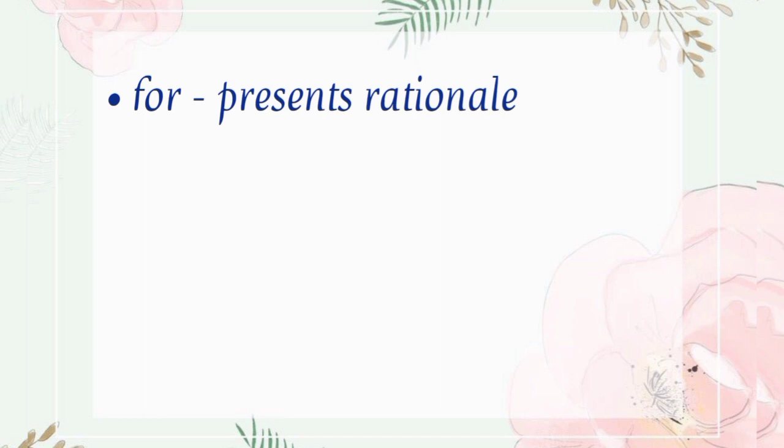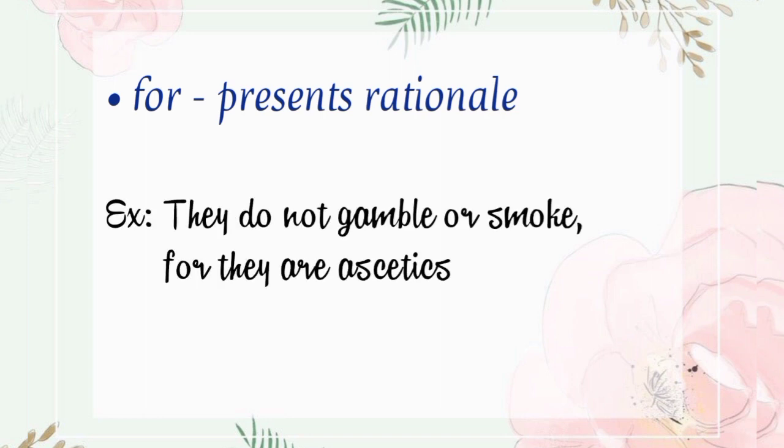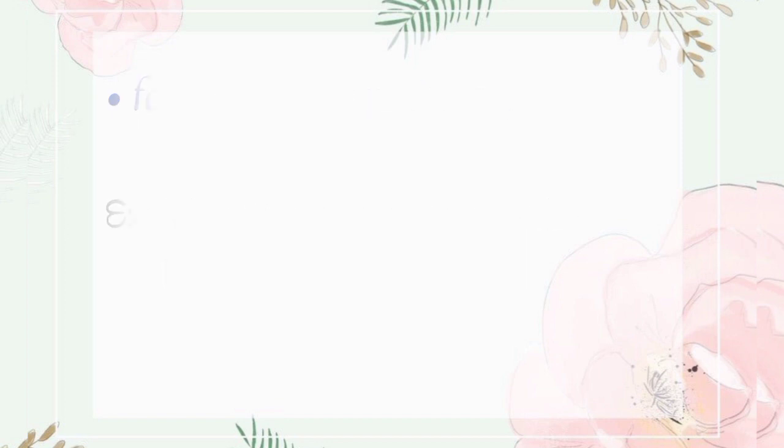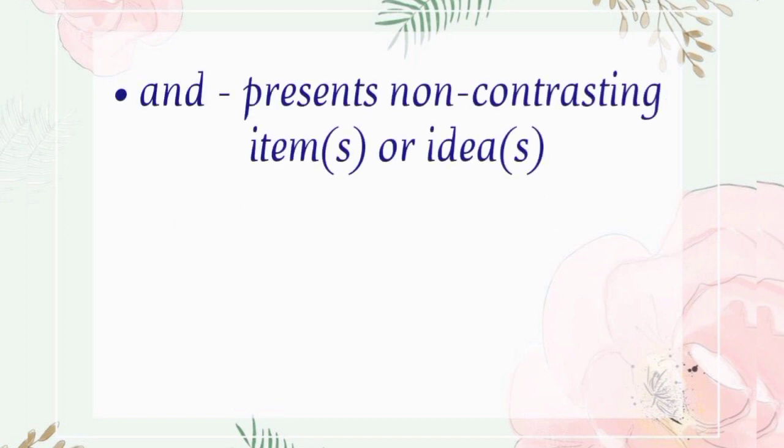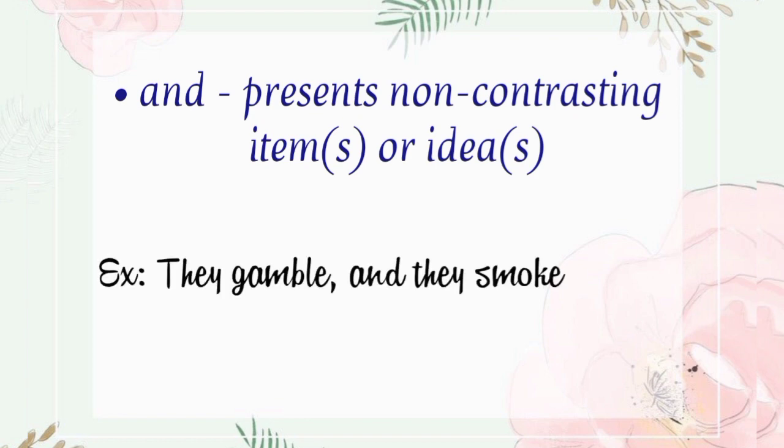For presents rationale. For example, they do not gamble or smoke, for they are ascetics. And presents non-contrasting items or ideas. For example, they gamble and they smoke.